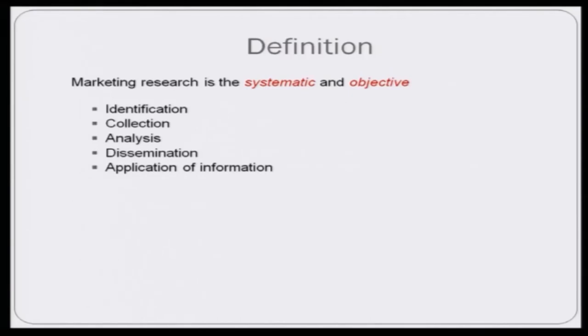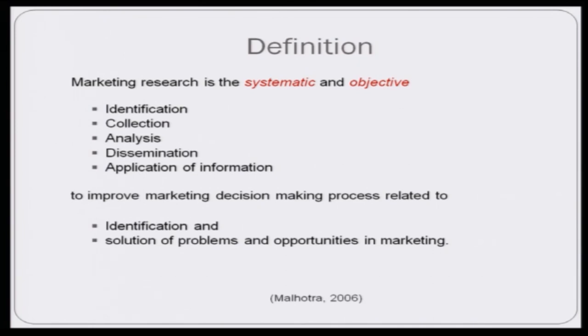The process is systematic and objective, and it involves identification, collection, analysis, dissemination, and application of information. The purpose of doing this is basically to improve the marketing decision-making process and help marketing managers in two ways: in the identification of the problem, and in creating the right or suitable solutions in the market. That is the definition of the marketing research process.